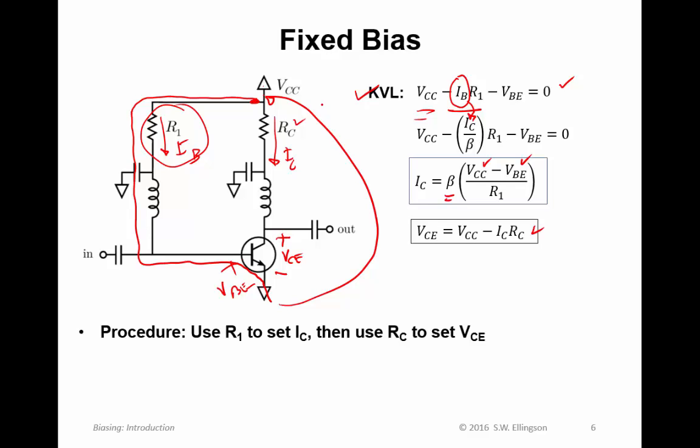So the procedure for doing fixed bias goes as follows. You would use R1 to set the collector current according to this equation, and then you'd use RC to set VCE according to this equation. So that's straightforward enough.